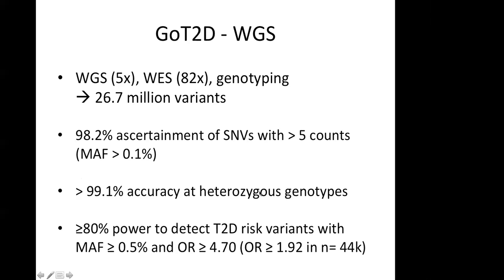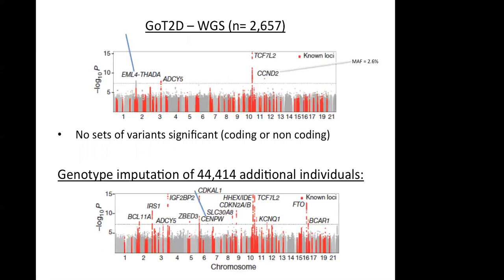Accuracy was determined to be quite high at 99.9%, and the study had good power to detect type 2 diabetes risk variants with a minor allele frequency above 0.1–0.5% and an odds ratio above approximately 4.7, or even somewhat lower when sample size was later increased. So what did they find in this very nice dataset?